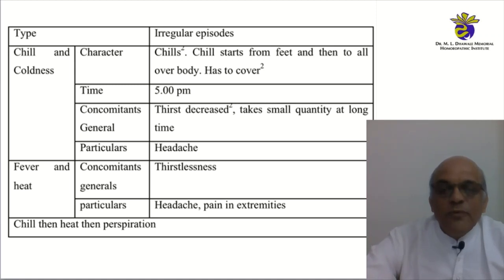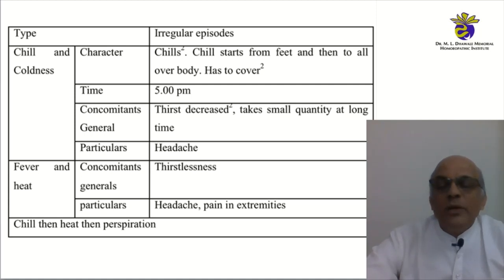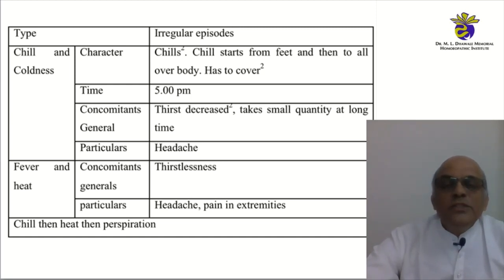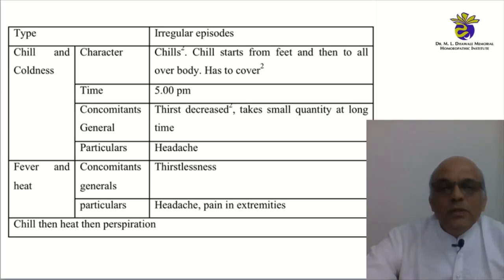If we apply the same philosophy of analysis of fever and go back to the case to park those symptoms, we see: in time — irregular episodes; chill — coldness, character, chill starts from feet and then all over the body, patient has to cover, chill begins at 5 PM. Concomitants during chill: thirst decreased, takes small quantities at long intervals, and a particular headache. When the heat stage comes up, the concomitants are thirstlessness, headaches, and pain in extremities. There is a sequence of events — chill, heat, then perspiration. This is how one analyzes using what Allen proposed.